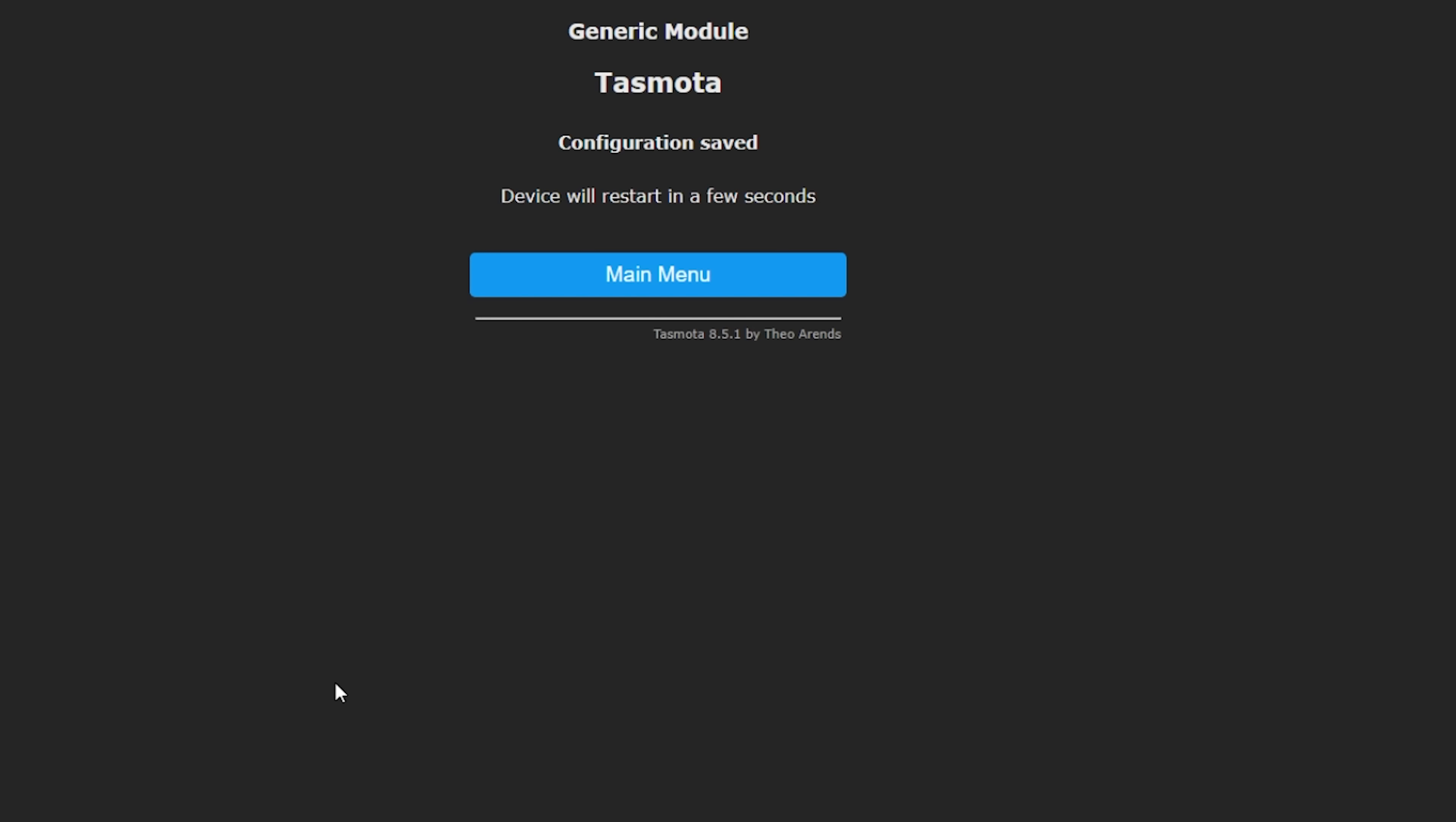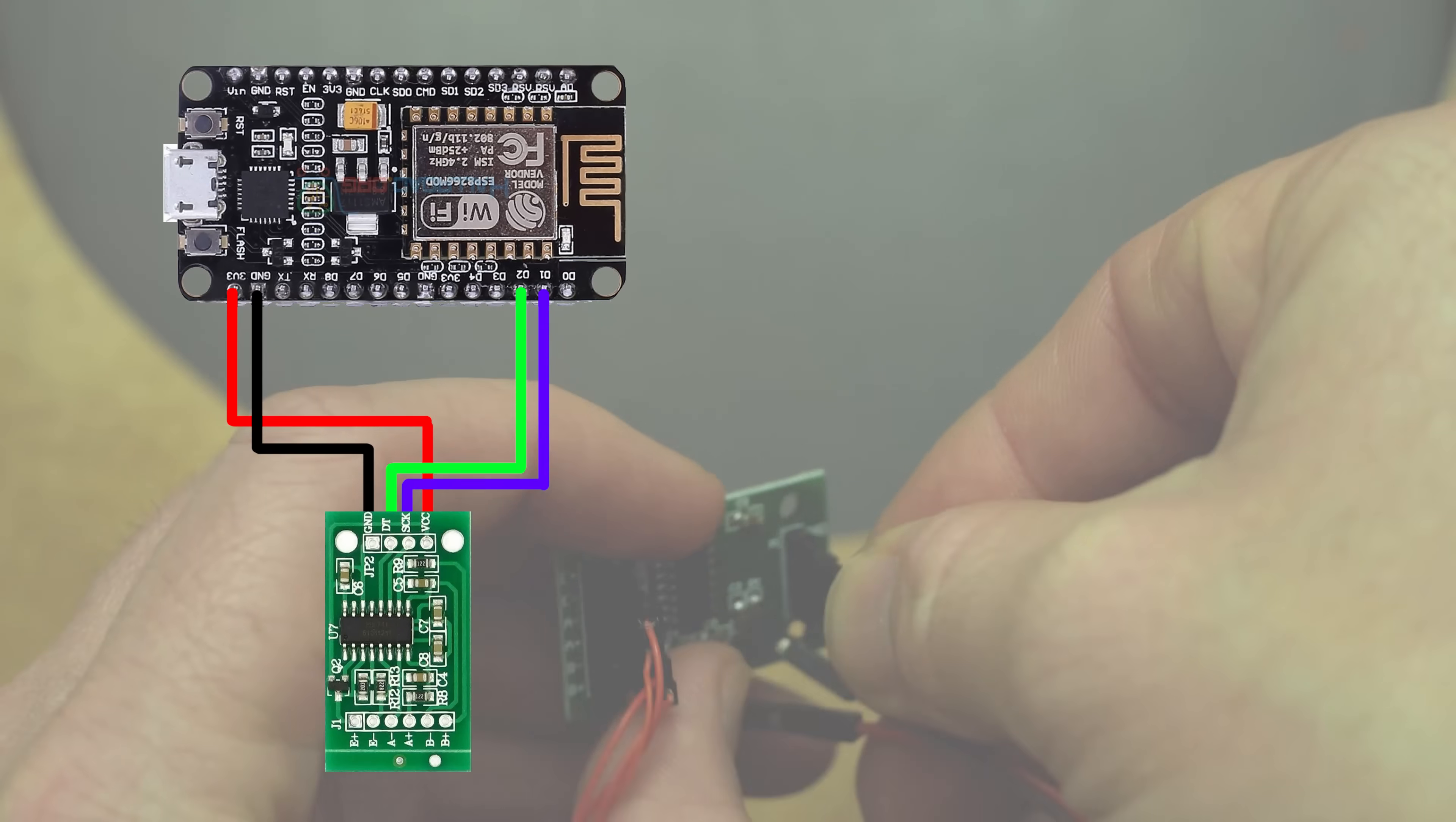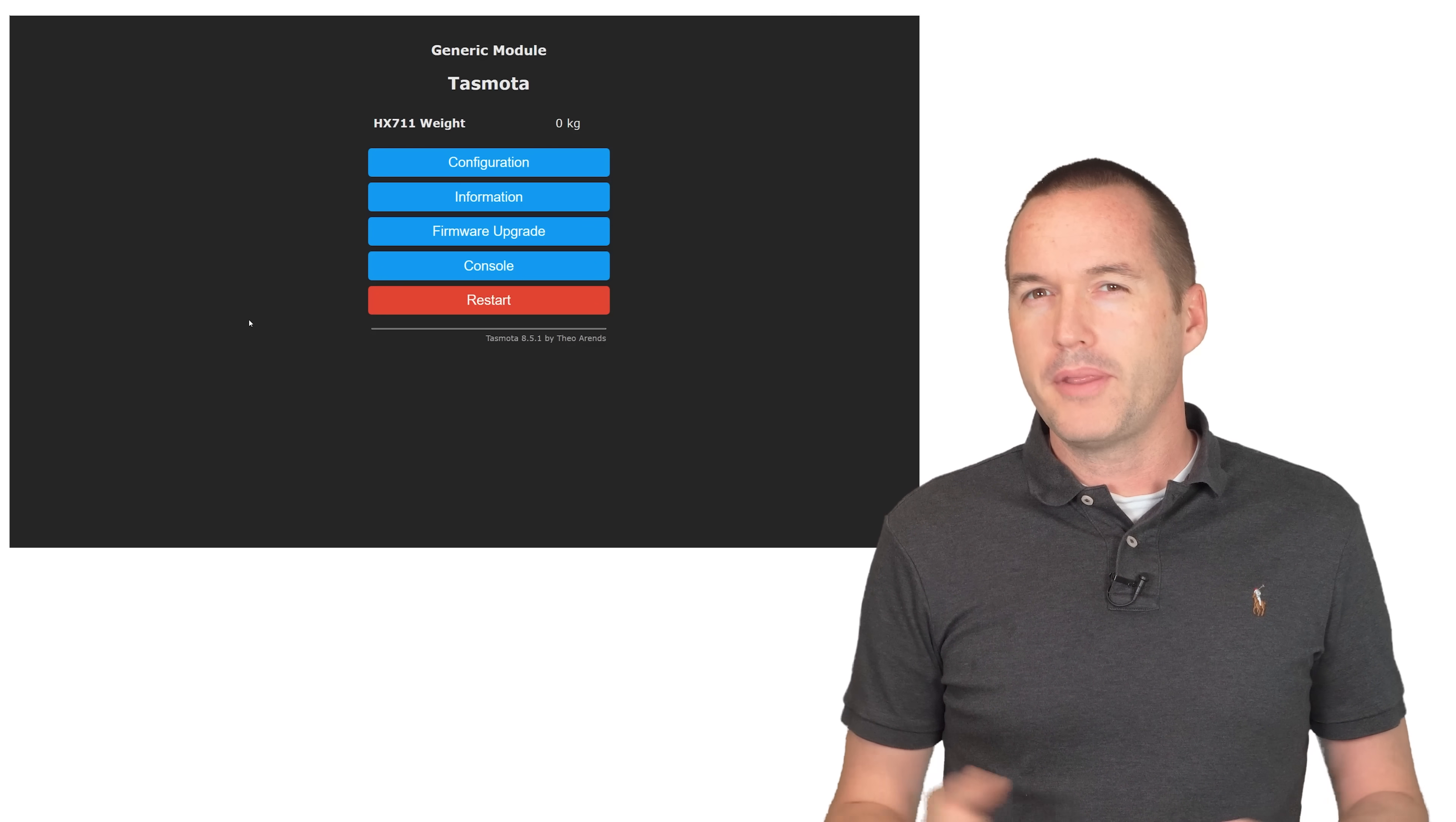Next you're going to connect your NodeMCU to your HX711 by connecting the ground to the ground, 3.3V on your NodeMCU to VCC on the HX711, and then connect the clock pin to D1 and the data pin to D2. After that you should see some data pop up in the Tasmota web interface for your new scale, but it's probably not going to be right.